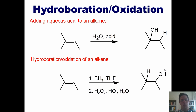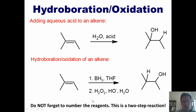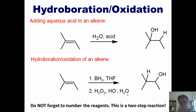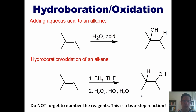One thing I want to point out is that when you are writing out these steps, do not forget to number the reagents. This is a two-step reaction: you have to write 1. BH3·THF, and 2. H2O2, hydroxide, and H2O. This reaction is called hydroboration oxidation, and it is the way that you can add an OH to an alkene and place the OH in the anti-Markovnikov position. I am not going to require my students to learn the mechanism, but I'd be happy to show it to anyone interested.